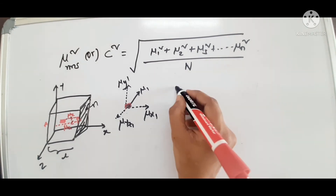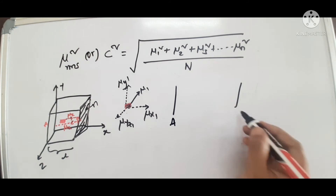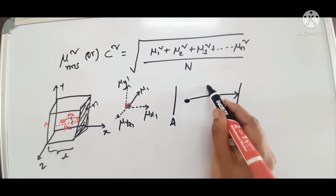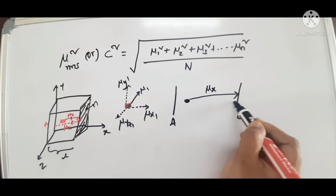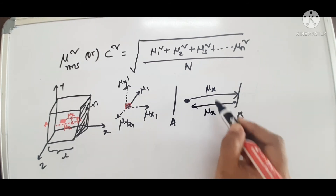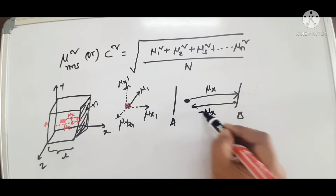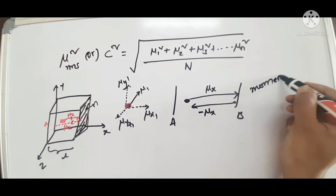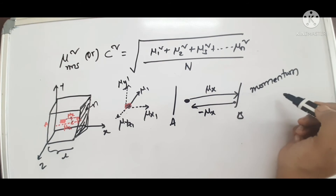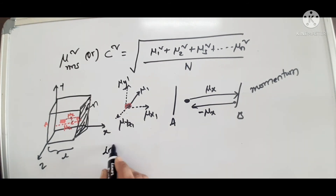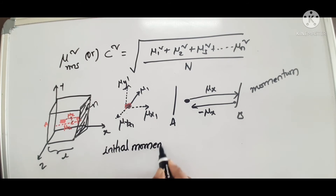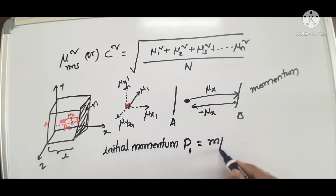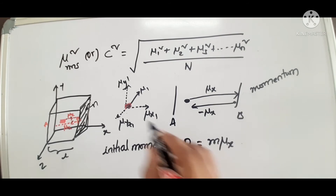If you consider the momentum of the gas molecule, the momentum will change. This change in momentum will give us the pressure. The initial momentum of gas molecule P1 equals m into mu x, where m is the mass of that particular atom.